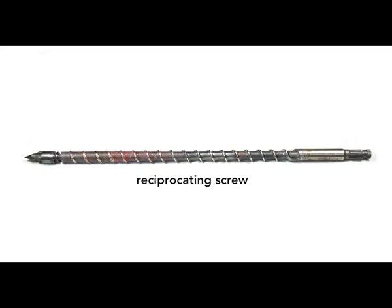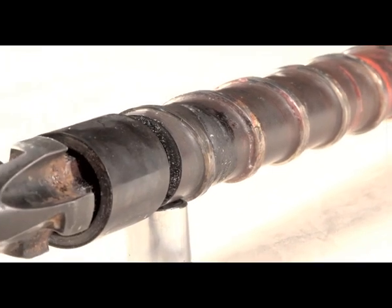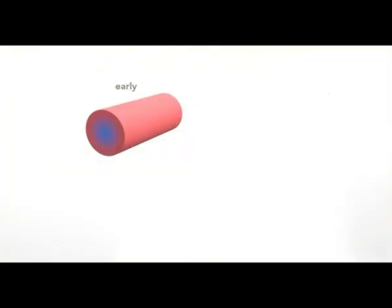The solution was this: the reciprocating screw, often regarded as the most important contribution that revolutionized the plastics industry in the 20th century. In the earlier plunger-style machines, plastic filled completely the cylindrical barrel. But the plastic was not at a uniform temperature. The reciprocating screw overcomes this in three ways.